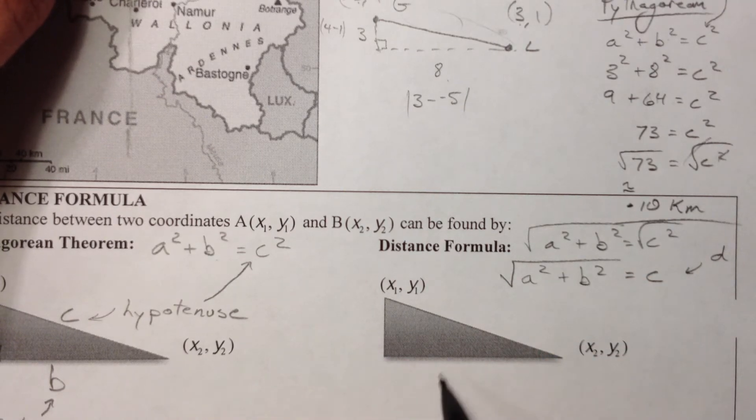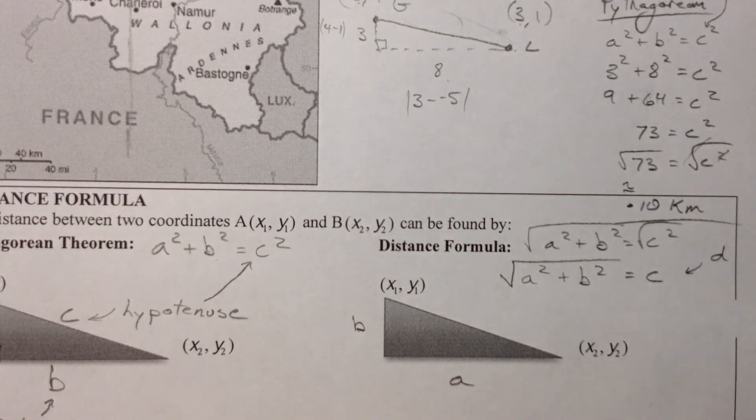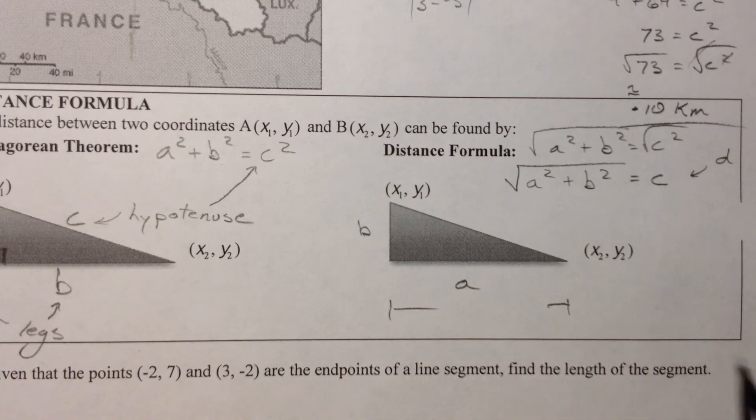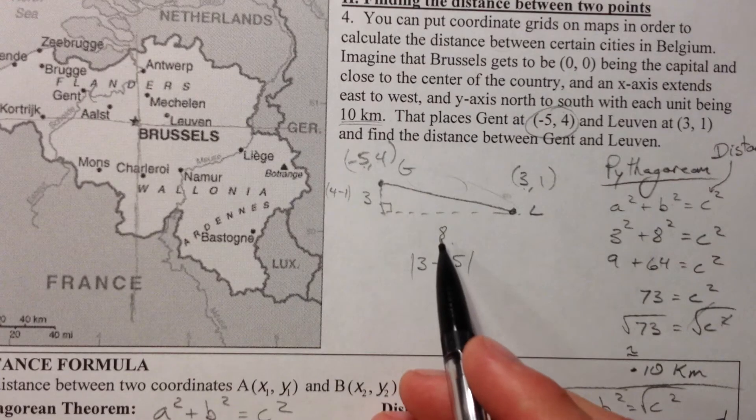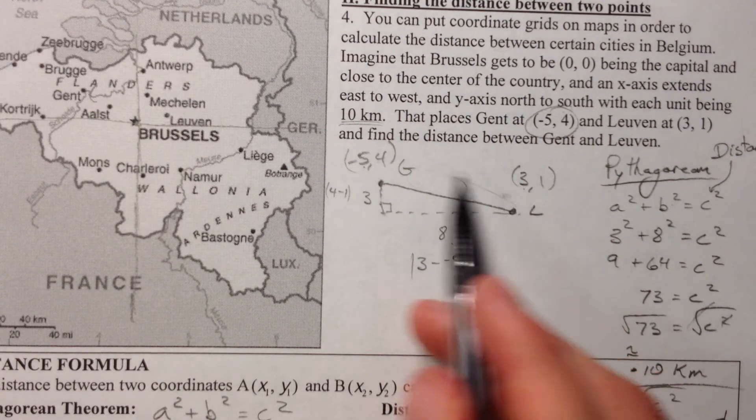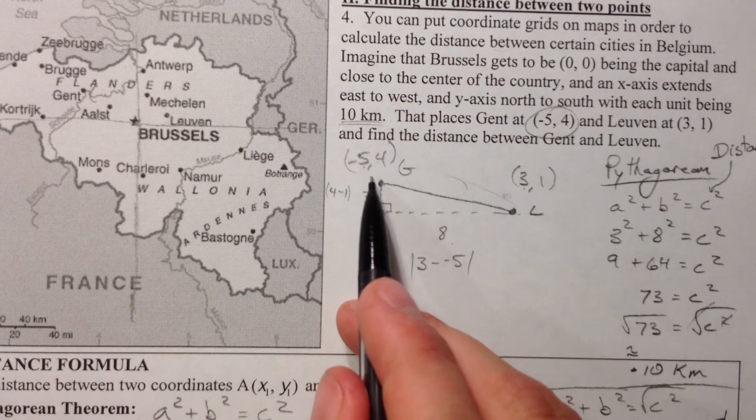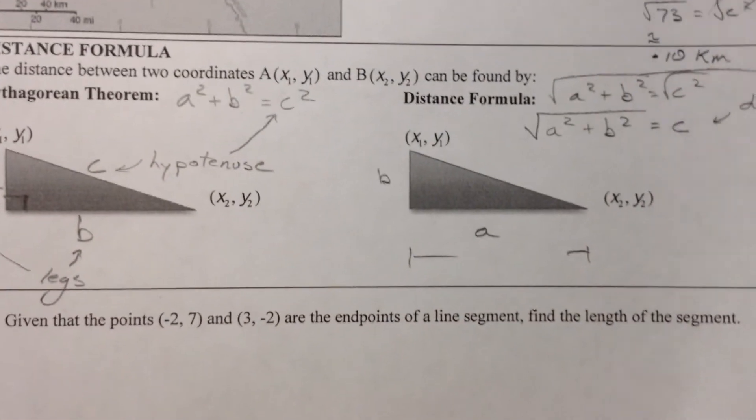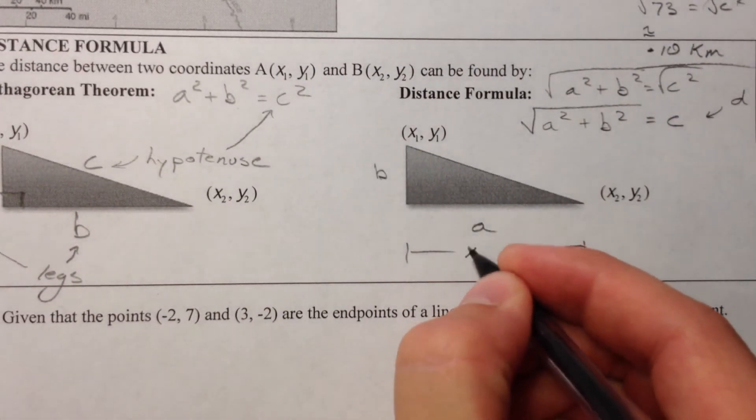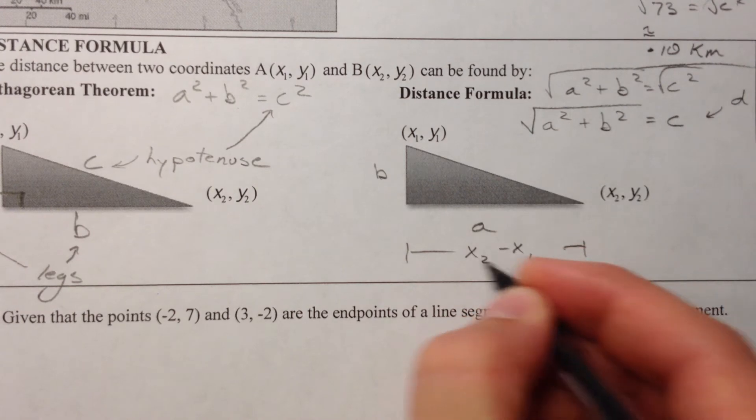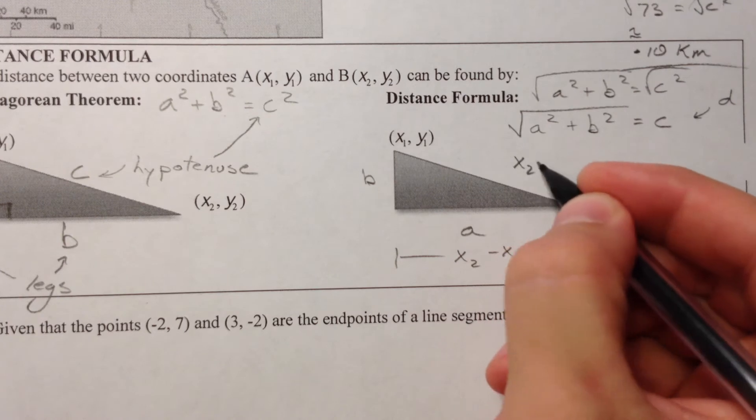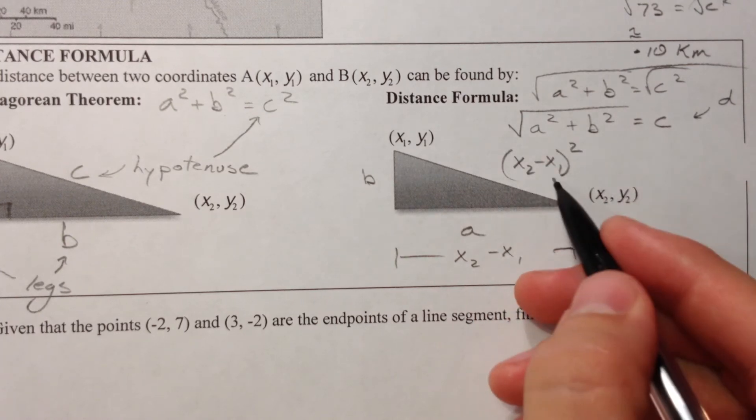And then the square root of a squared plus b squared they change into because to find a and to find b, what they do is they say this a right here is going to be the result of remember how we found the 8? We subtracted the 3 and the negative 5. We did 3 minus the negative 5 gave us the 8. And so you do x2 minus x1. And again, the order doesn't matter because what's going to happen is x2 minus x1 is going to be squared.